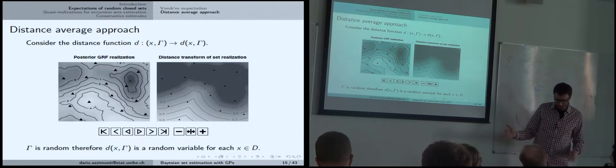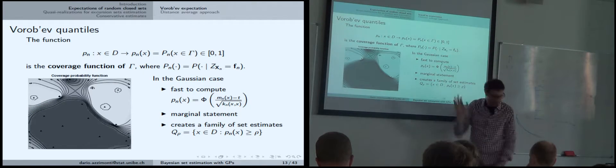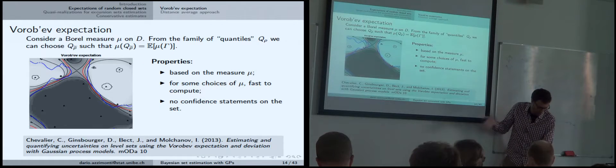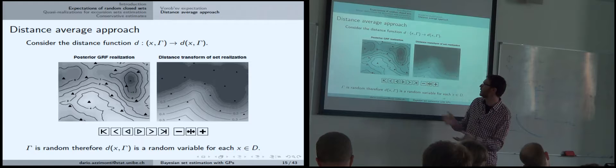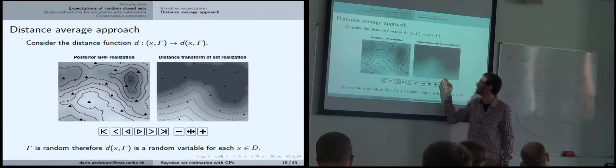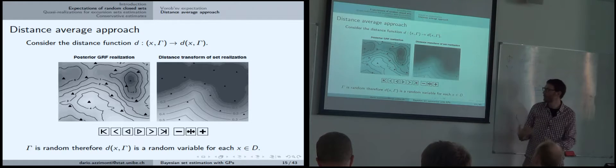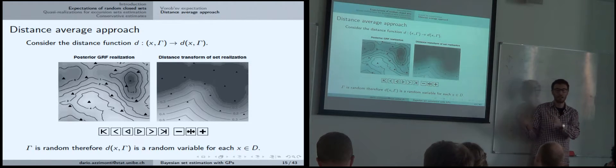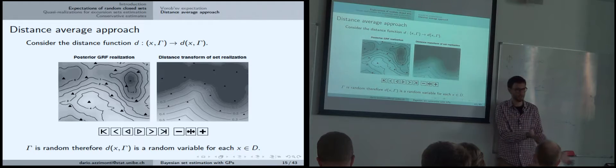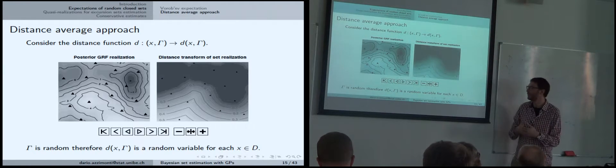Another approach: instead of looking at the probability that a point is inside — a binary thing, either inside or not — we can look at the distance. We define a distance function, in this case the usual Euclidean distance from a point to a set. We use this distance function to compute averages. The general idea is to move from the space of sets — where we don't really know how to compute expectations — to a space where we can, linearizing the problem somehow. Before we used the pn function; here we use a distance function, a bit more fuzzy version of the previous approach.